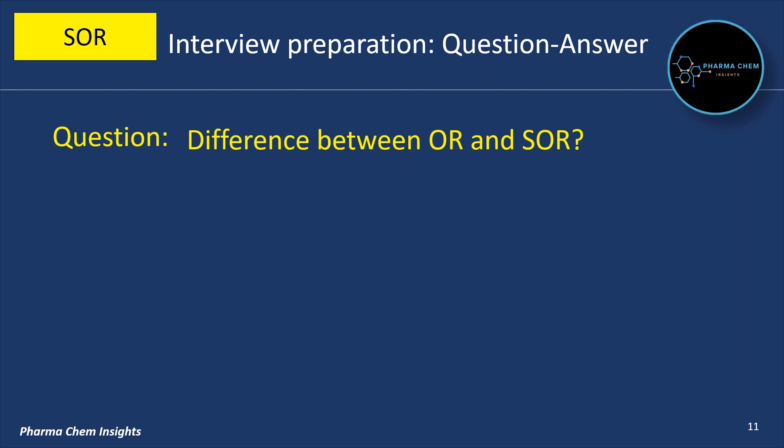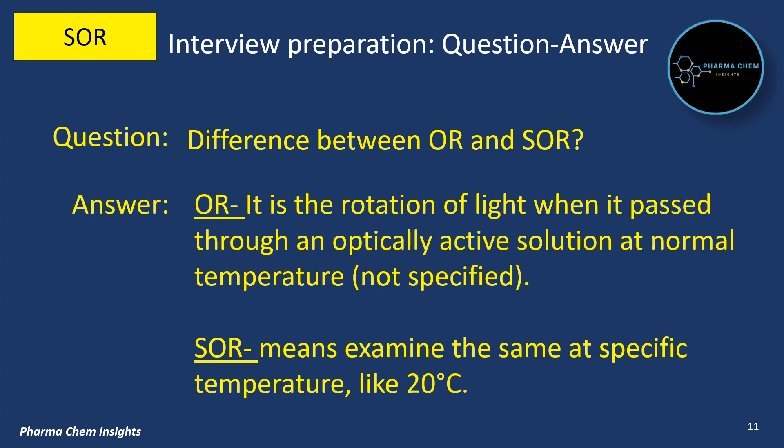What is the difference between OR and SOR, that is optical rotation and specific optical rotation? Optical rotation is the rotation of light when it passes through an optically active solution at normal temperature, which is not specified. In specific optical rotation, it is the same measurement but at a specific temperature, like 20 degrees Celsius.